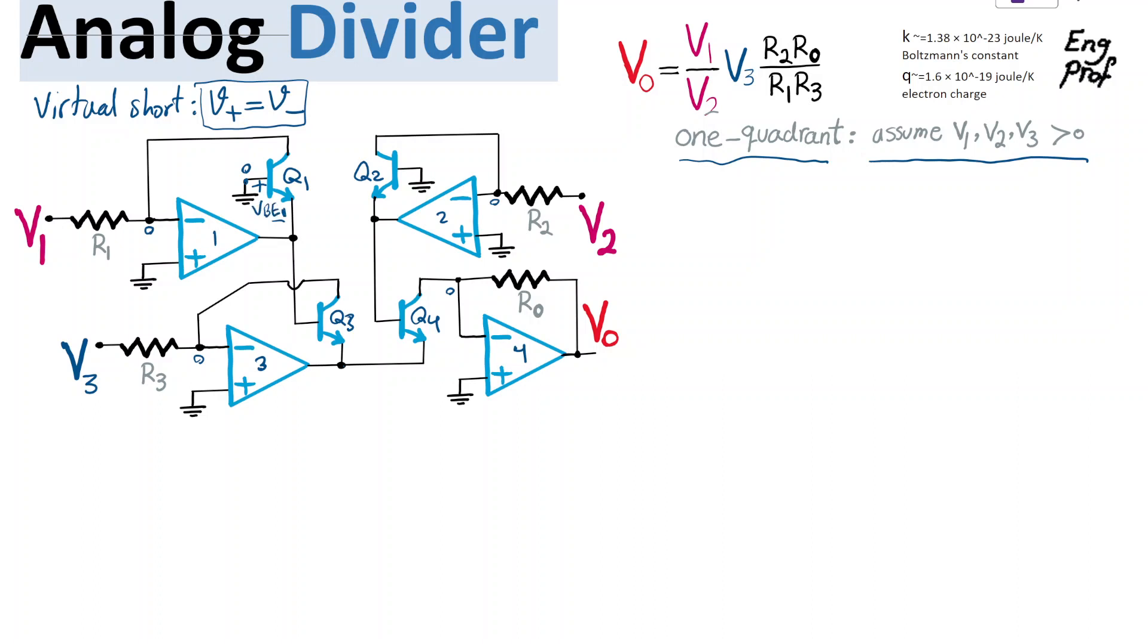And then from the emitter, we get to base of transistor Q3, because the emitter of one connected to base of Q3. And then from there, we have another base emitter, this time base emitter of three. And we get to the common emitter here, which is the emitter of three and four that is in common.